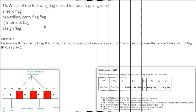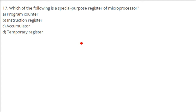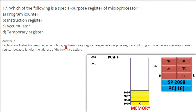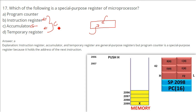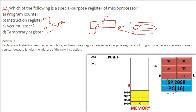Which of the following is a special purpose register of a microprocessor? The instruction register, accumulator, and temporary register are general purpose registers. Whatever operations happen occur in the accumulator by default. The answer is the program counter, because the program counter holds the address of the next instruction to be executed. This is a 16-bit register.